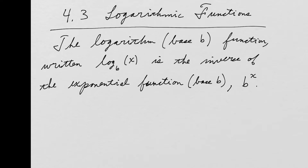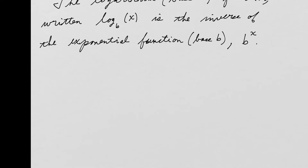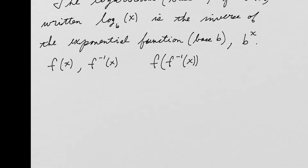Because these are inverses, remember the property of inverses from chapter 1: if I have some function and then I have the inverse of that function, and I take the composition — the function composed with the inverse — it ends up undoing the original function and you get back x. Same thing if I do the inverse composed with the original function — I get back x.